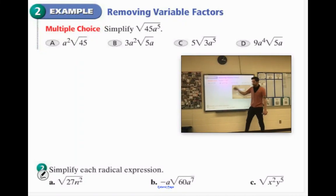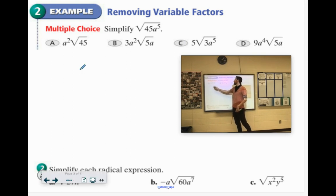Simplify √45a⁵. Now they have multiple choices here. So here's what I do when I'm doing this. I have my perfect radical where all my perfect squares go and then I have my leftover pile.